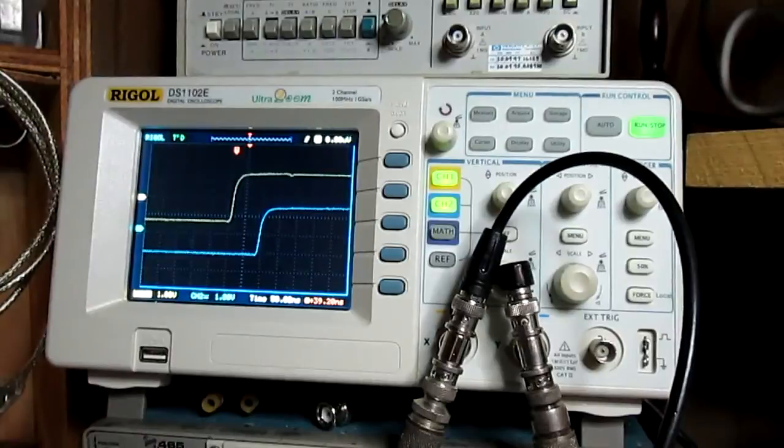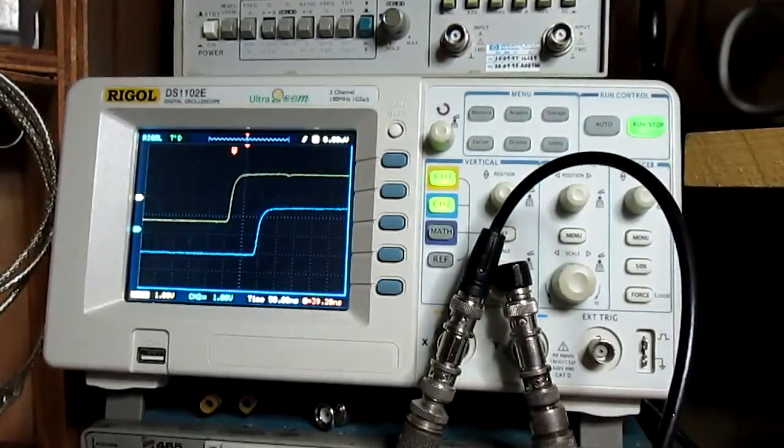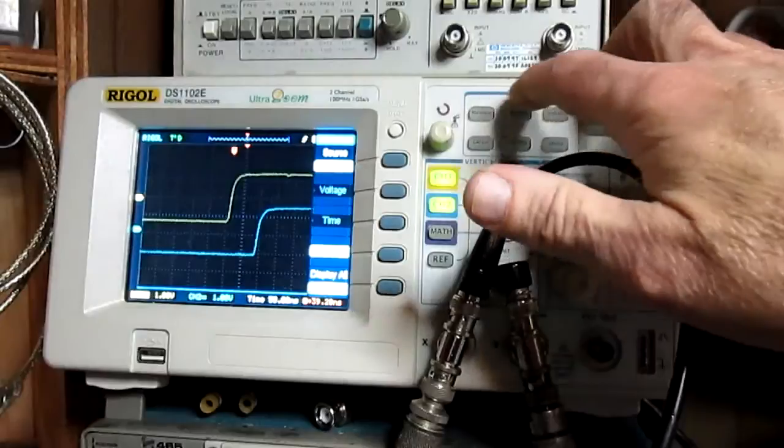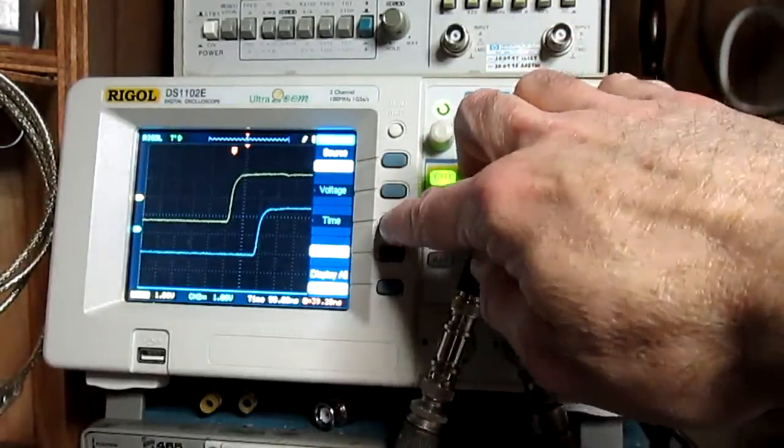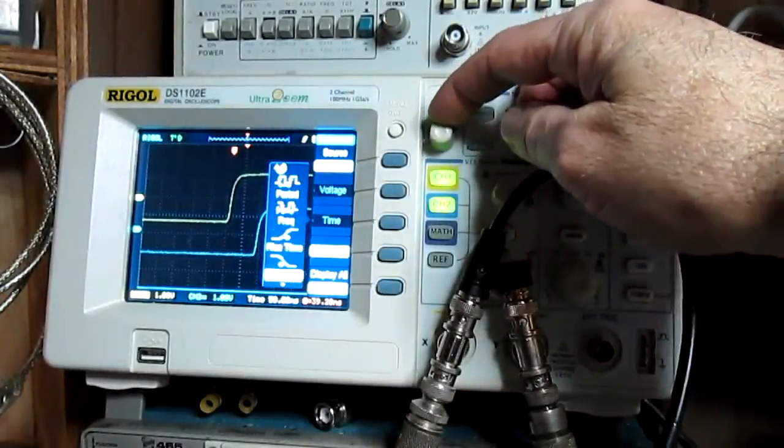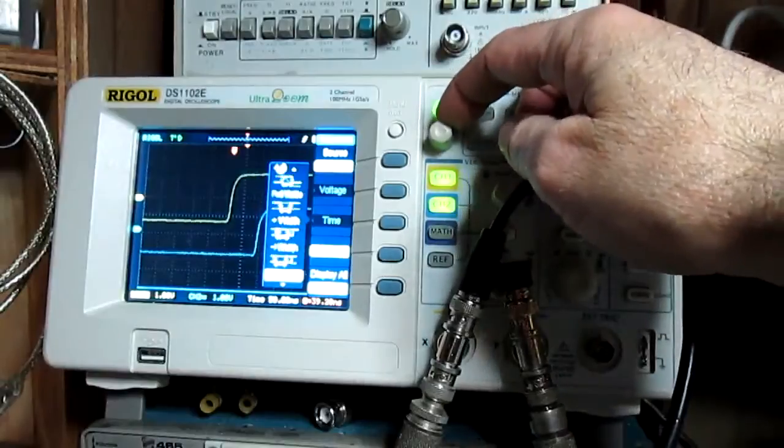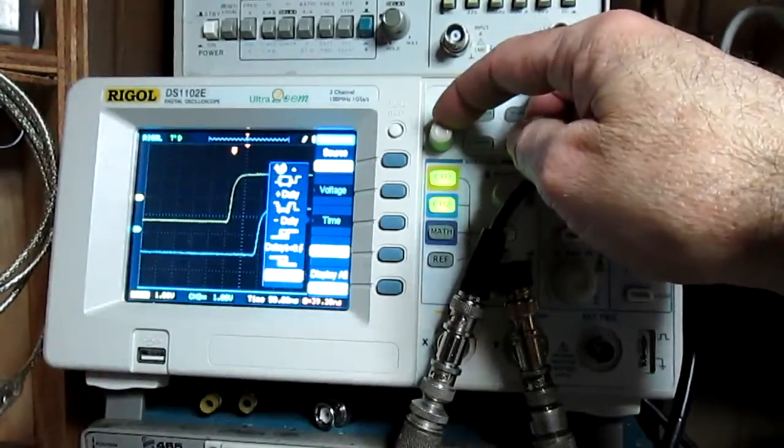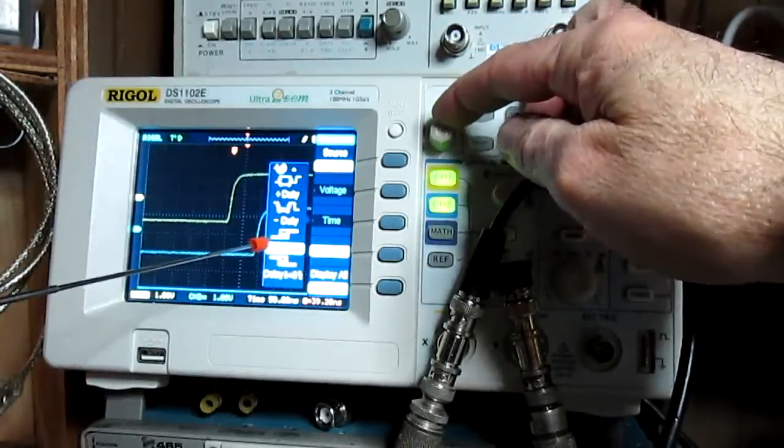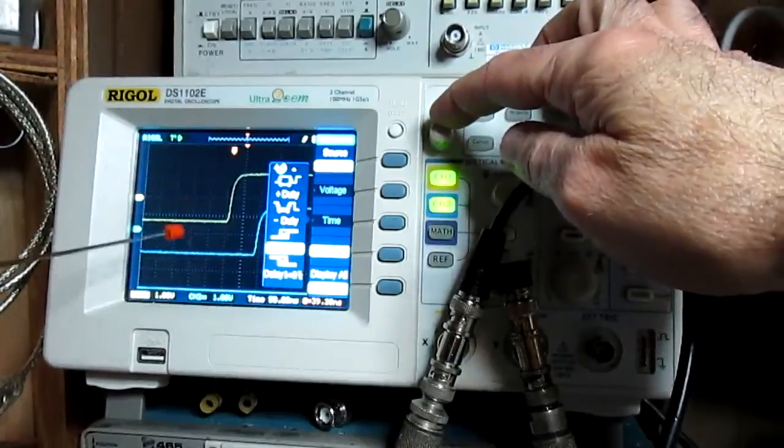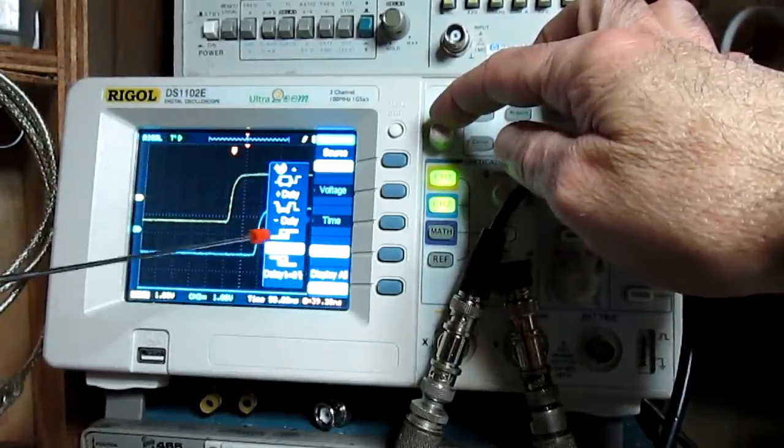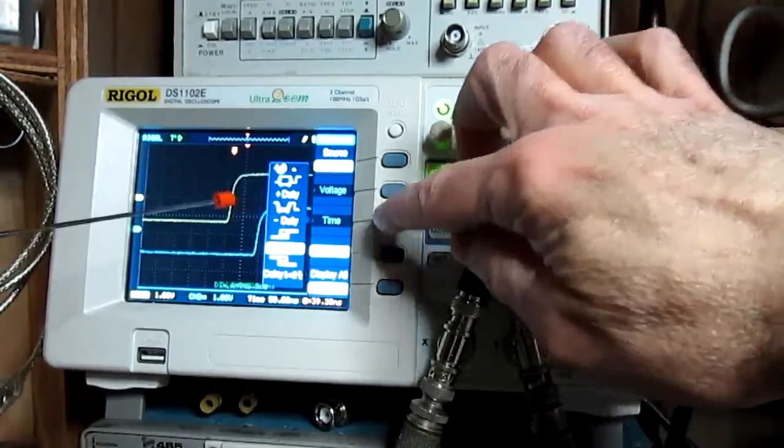So, on the Rigol DS-1102E oscilloscope, what you have to do is press measure, and then go down to time, and you can adjust the menu down with the encoder knob here. It has some delay for the rise time and delay for the fall time, and we're looking at the rise time here, so we want to do delay for the rise time. And hit that.